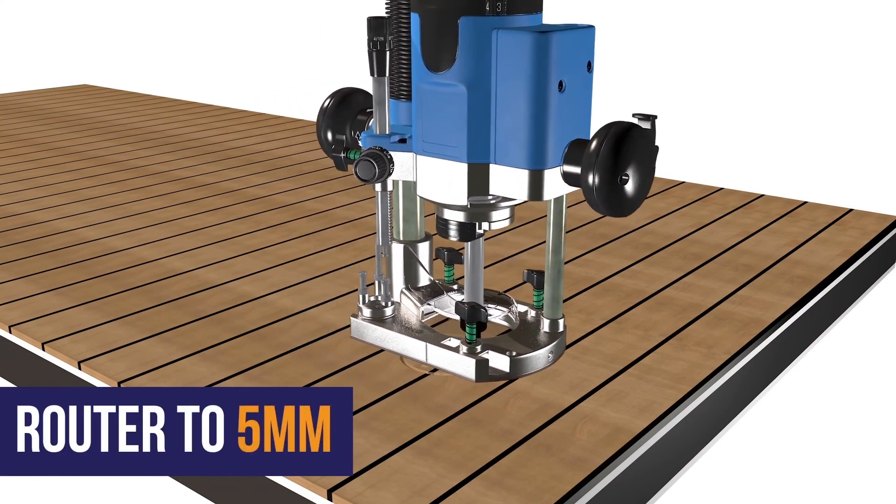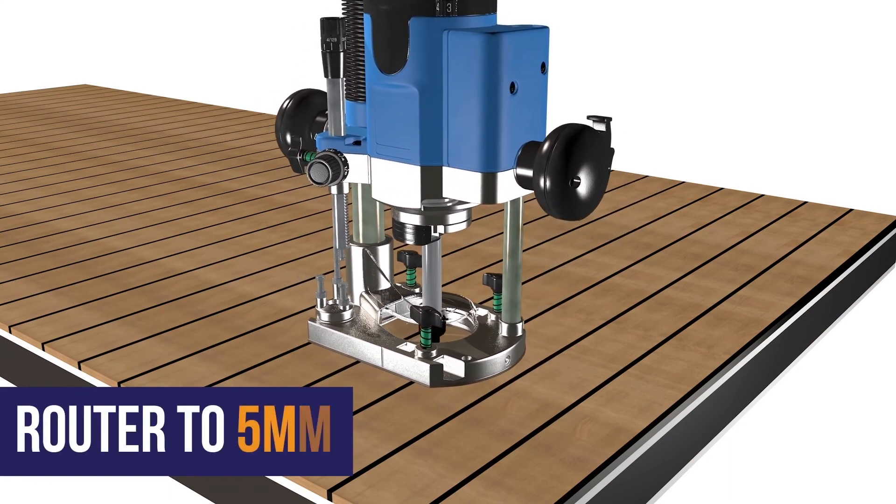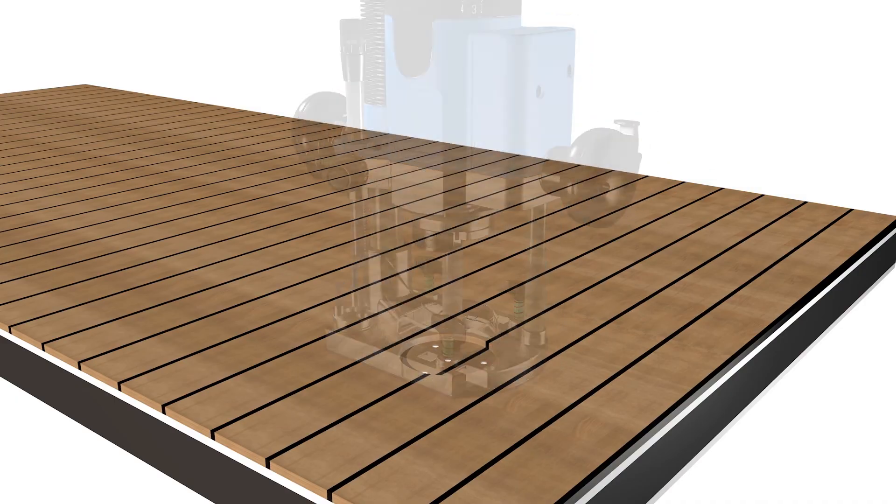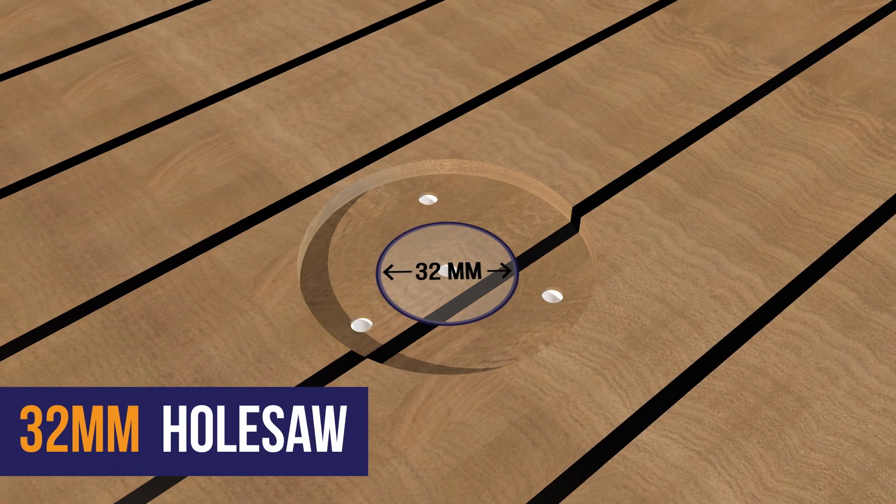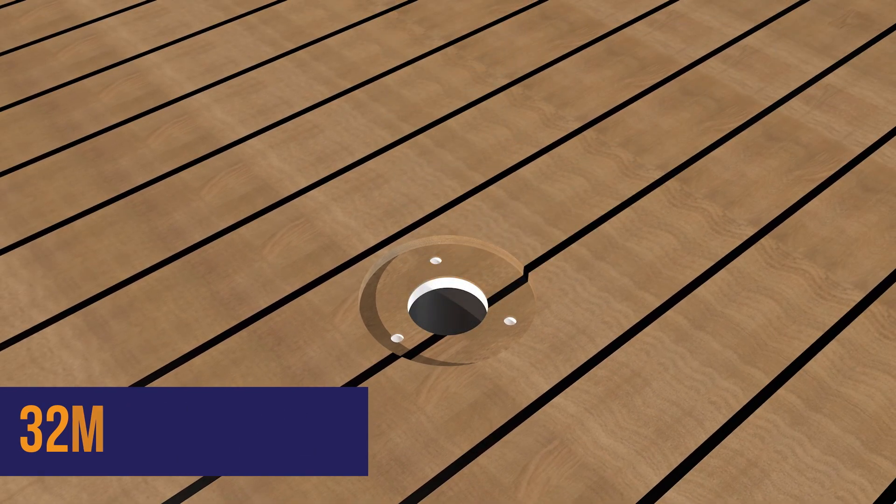Use a router to remove the countersink to an even depth of 5mm. Using the 32mm hole saw that is provided, drill through the full thickness of the deck in the center of the countersink.